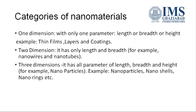In the case of two dimensions, we have only length and breadth — for example, nanowires and nanotubes, like carbon nanotubes, which have just two dimensions.